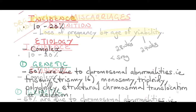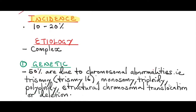The incidence of miscarriages is about 10-20% of all pregnancies, and the cause of miscarriages is quite complex, as there could be a number of reasons causing a miscarriage. So it's quite difficult to pinpoint which exactly caused the miscarriage.